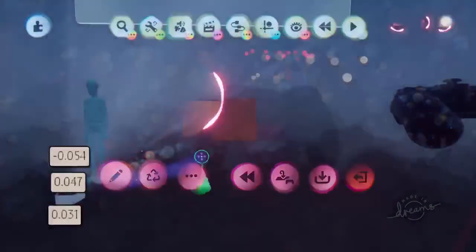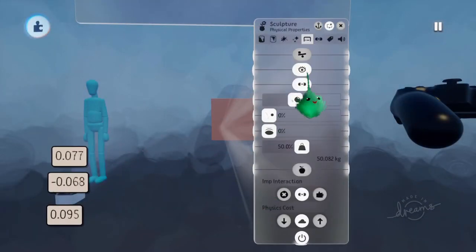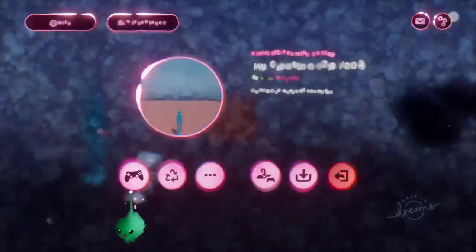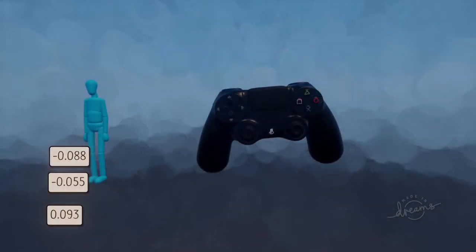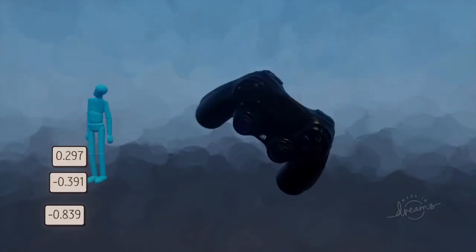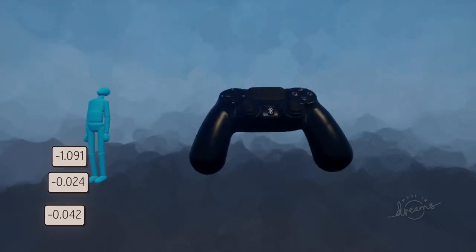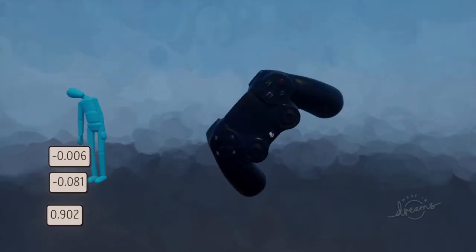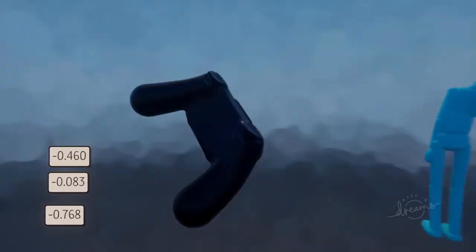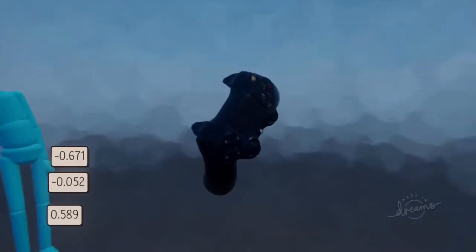So let's make that invisible. That would be a good idea. Now tilting left, tilting right, towards us, away from us. And if we hold it at a funny angle, it stays at that angle because we're using our local solution.